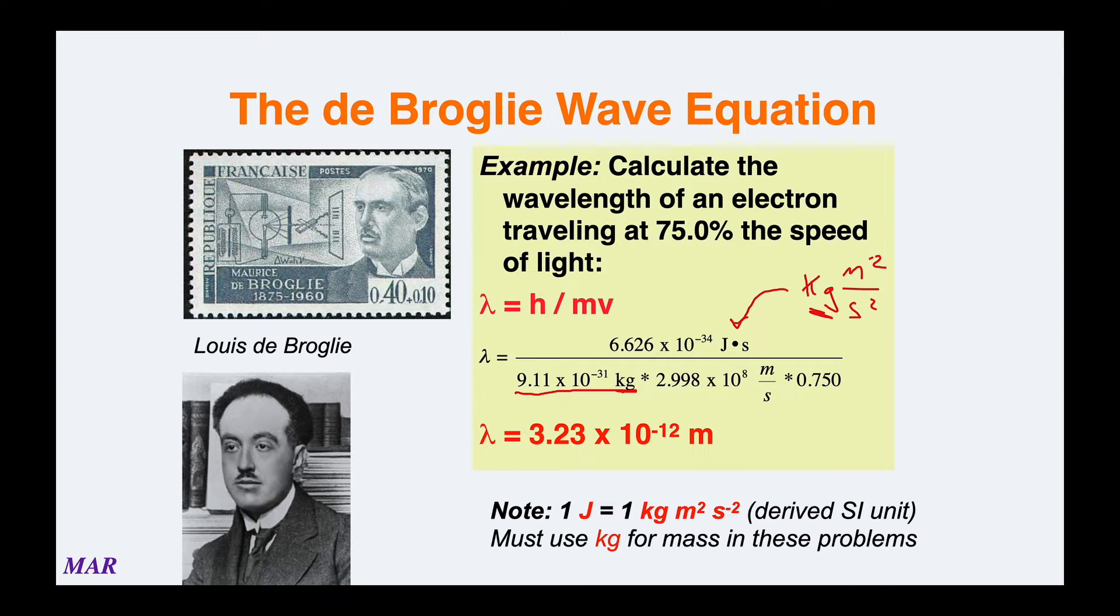That is a wavelength which can be measured, a measurable wavelength for an electron traveling at that speed. You have to use kilograms for the mass in these problems.